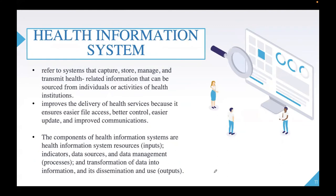Now let us review the definition of your health information system. Number one, it refers to the systems that capture, store, manage, and transmit health-related information sourced from individuals or activities of health institutions. Another definition: it improves delivery of health services by ensuring easier file access, better control, easier update, and improved communications. The components of HIS are health information system resources — your inputs — indicators, data resources, and data management for processes, and the transformation of data into information and its dissemination and use for output.